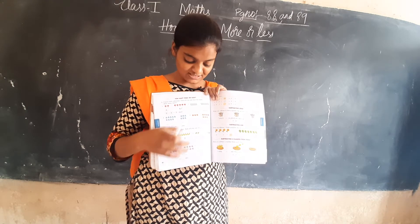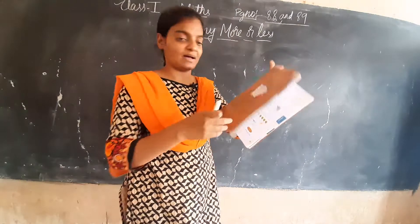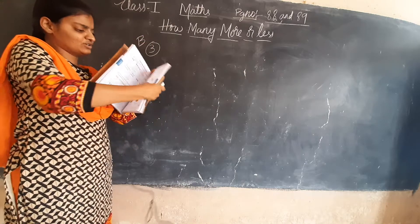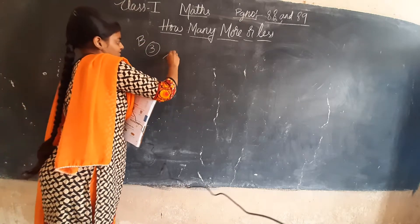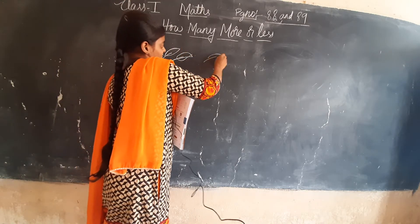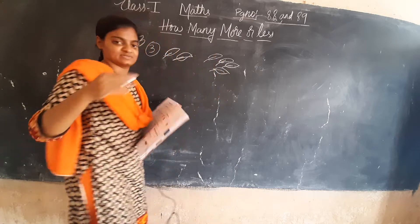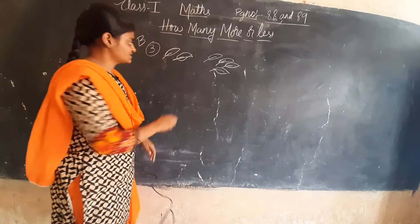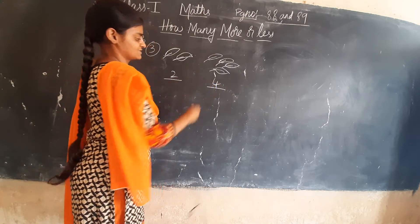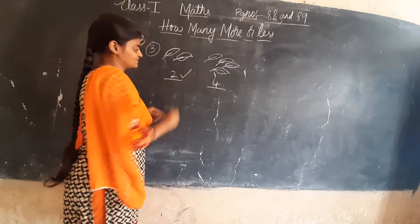Second one they have given fishes — do second and fourth as homework. Now I am going to do the third one. B bit third one — they have given leaves. In the first column, two leaves. In the second column, four leaves — 1, 2, 3, 4. Which is less? Two is less. Tick beside two.